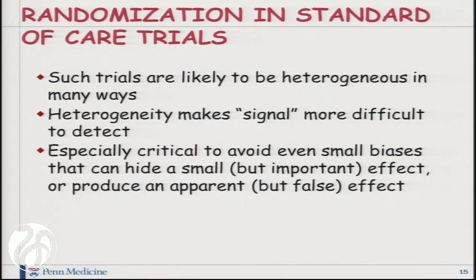Randomization in standard of care trials — the theories and goals — isn't different from randomization in any kind of clinical trials. But it's worth noting that standard of care trials are likely to be heterogeneous in many ways, and heterogeneity makes a signal more difficult to detect. There's going to be more variability. We are trying to do studies where the results are maximally generalizable. In these kinds of studies, it's especially critical to avoid even small biases that could hide a small but important effect or produce an apparent but false effect.